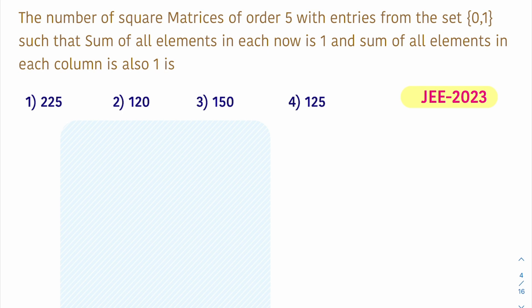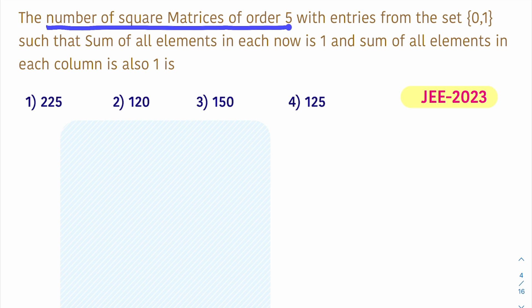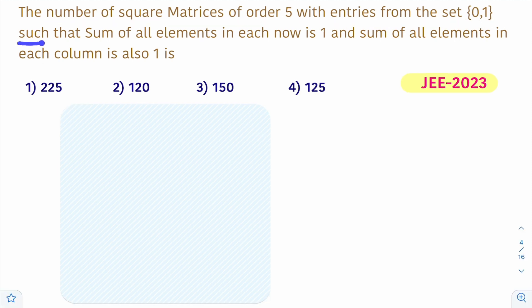This question is from Matz's chapter, given in JEE 2023 January session. The problem asks: how many square matrices of order 5 are possible with entries from the set {0, 1} such that the sum of all elements in each row is 1?